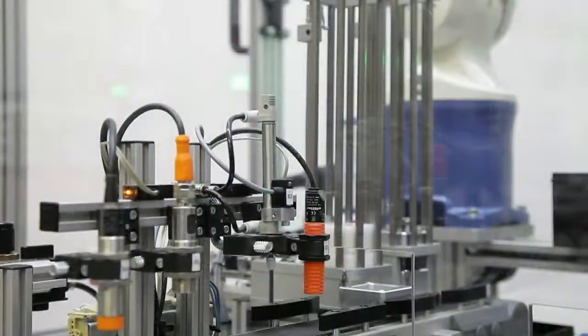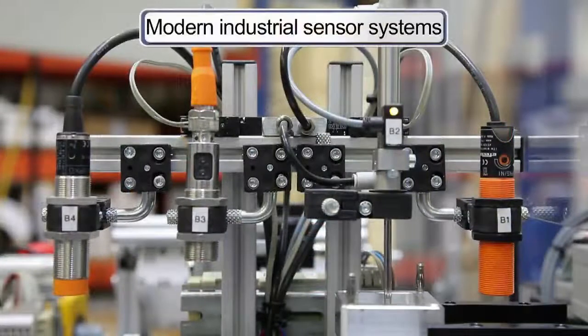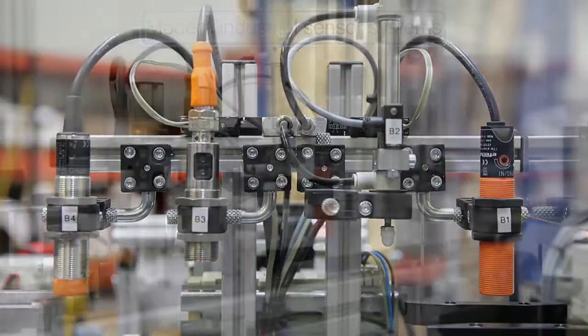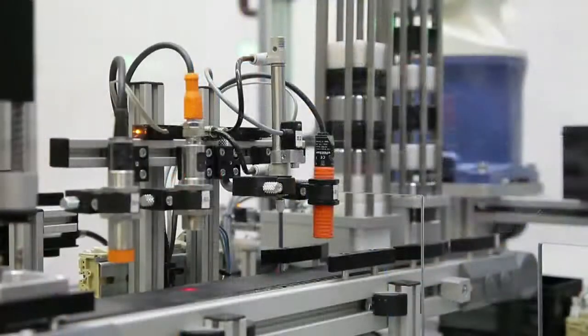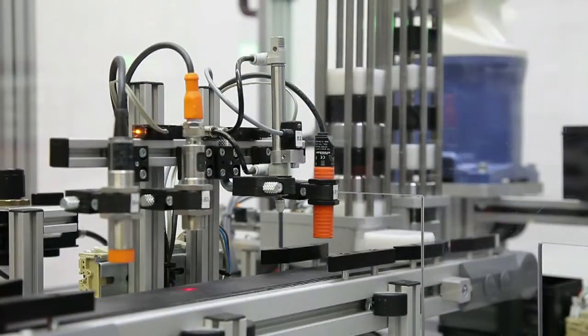It begins with the separation, transport and testing of different CUBE halves. Different sensors first determine the material properties and orientation of the workpieces used.